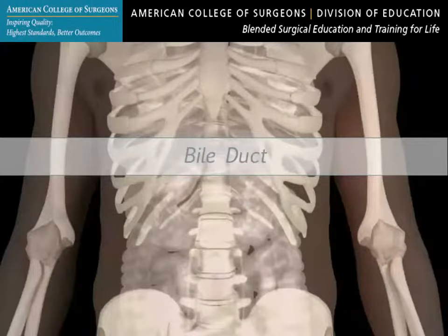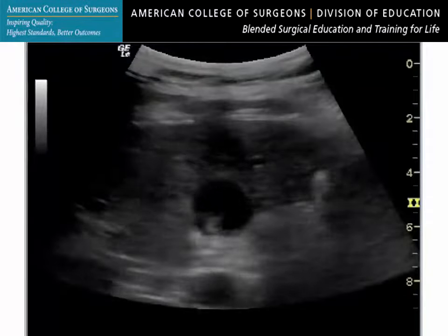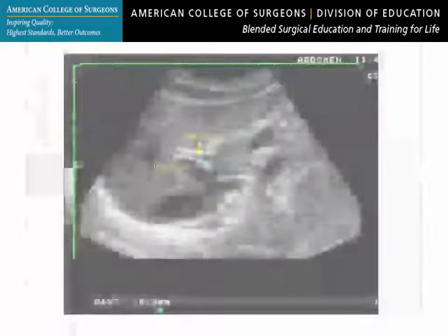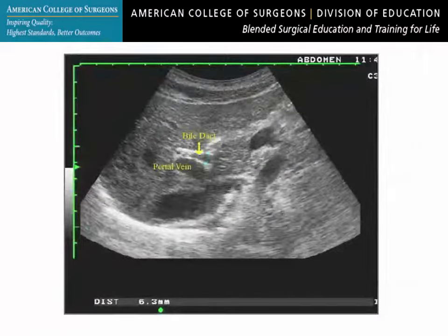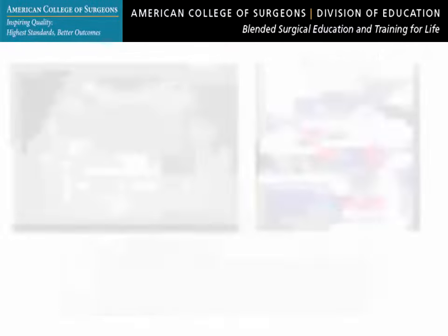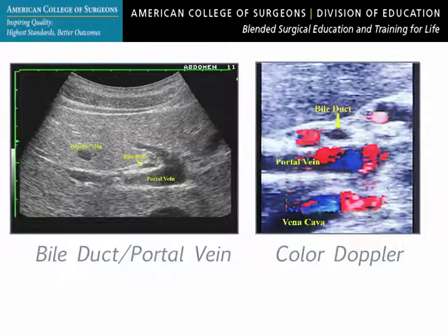Normally, the bile duct is located anterior and parallel to the portal vein. Its normal dimension is 6 or 7 millimeters or less. It can be up to 10 millimeters in the elderly and in post-cholecystectomy status. Color and power Doppler imaging can be used to differentiate the bile duct from the hepatic artery, portal vein, and other surrounding vascular structures.